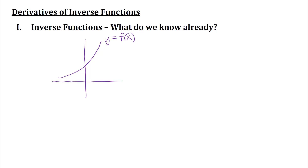If we think about what the inverse function does: for any function we have an input, the function matches that input to a particular output, and then the inverse function just reverses that. So from the diagram, if I have an input point A and the output is B on the graph of my original function, then the inverse function would have an input of B and an output of A — x and y coordinates are switched around.